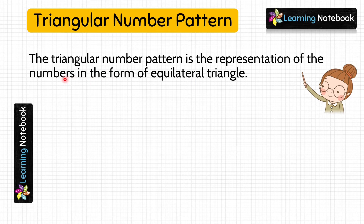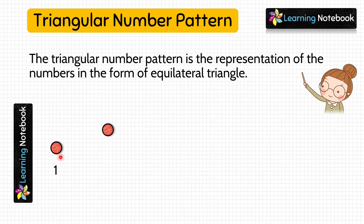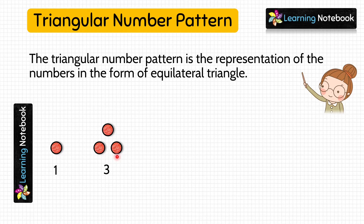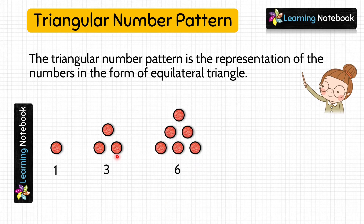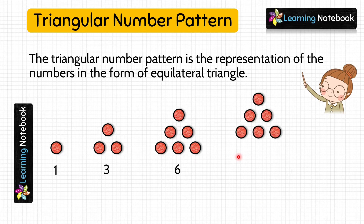First, paste one bindi — it represents 1. Then paste 3 bindis to form an equilateral triangle. So we have pasted 3 bindis here. Next, let's make another equilateral triangle. For this, we will paste 6 bindis as shown here. Next, let's form another equilateral triangle by pasting 10 bindis.